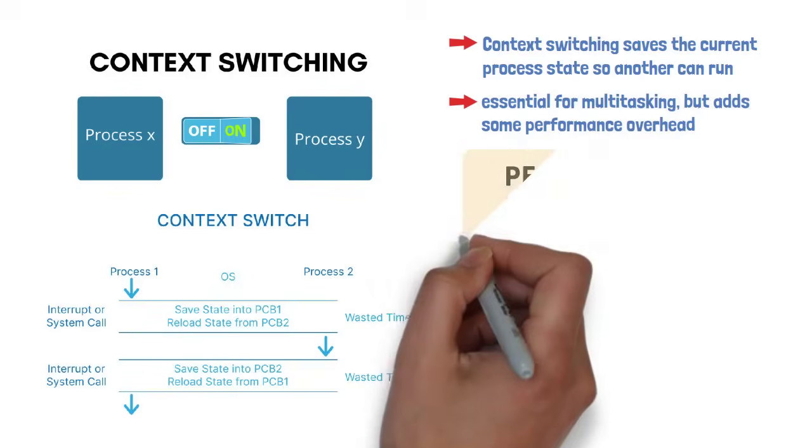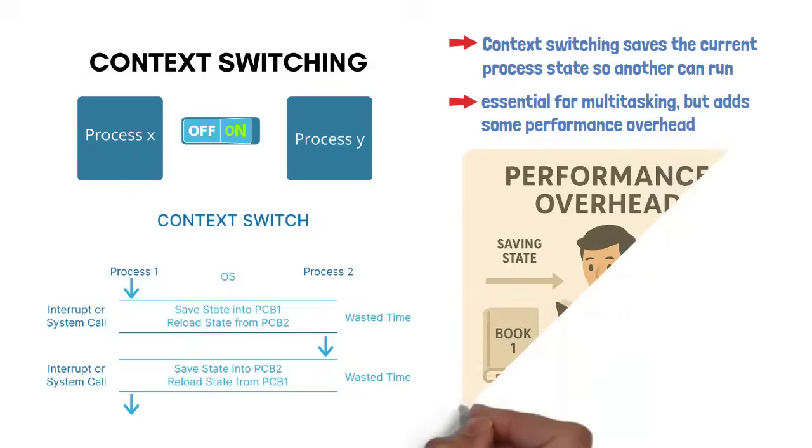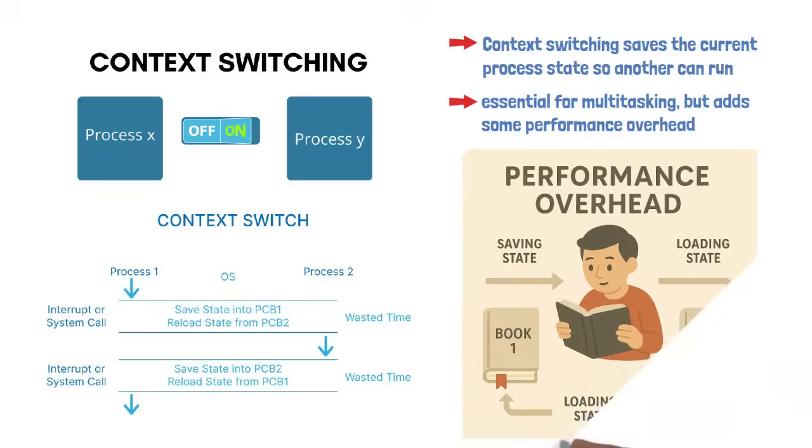Imagine you're reading three different books, switching between them every few minutes. Each time you switch, you need to bookmark your page and remember where you left off in the story, saving state. Then recall what happened previously in the next book, loading state. These transitions take time. That's your performance overhead.